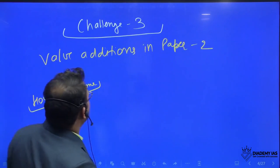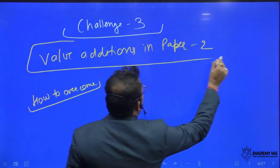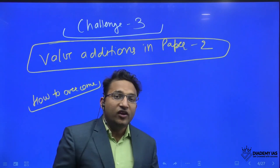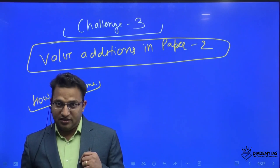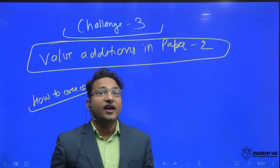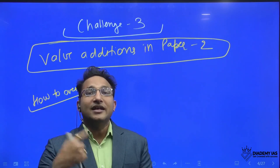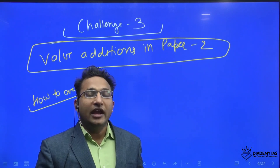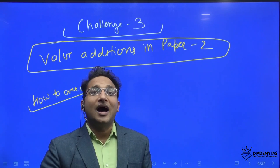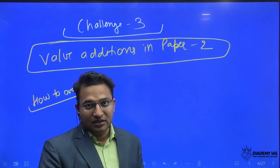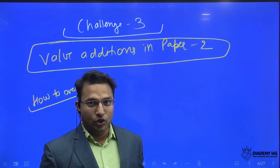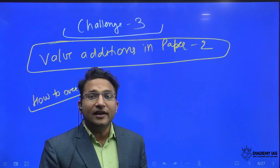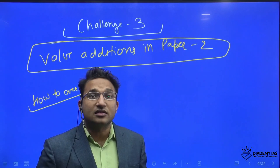Third challenge is the value addition in paper two. This is missing. And the problem is that we are not interested in this. The problem is that we are reading only single material, plus we are following one or two standard books like Singh and Chhabra. In today's time, those books are just like NCERT. They are important, but not sufficient.